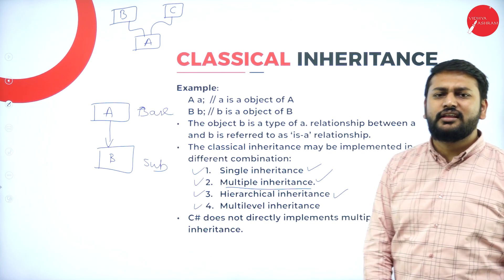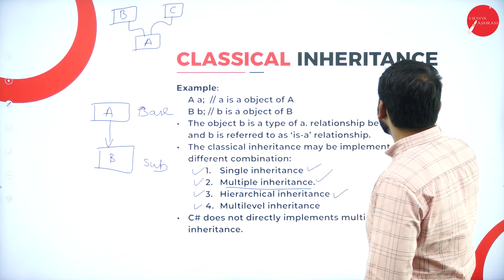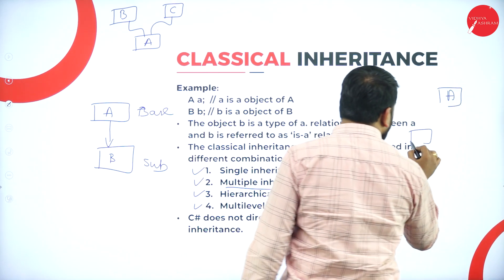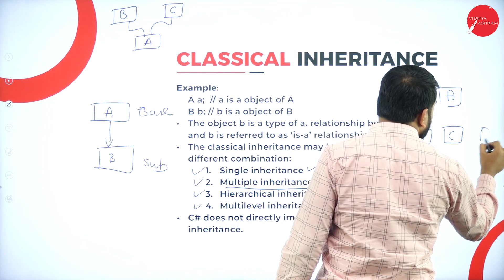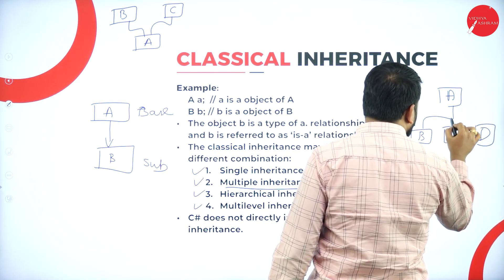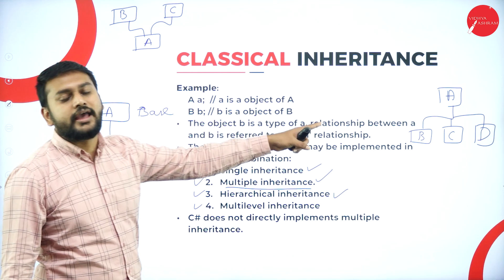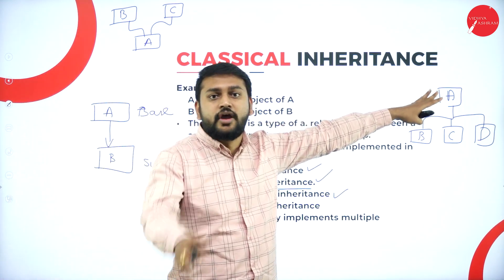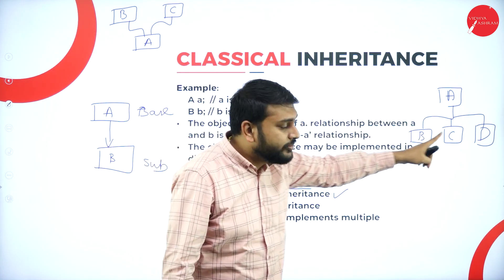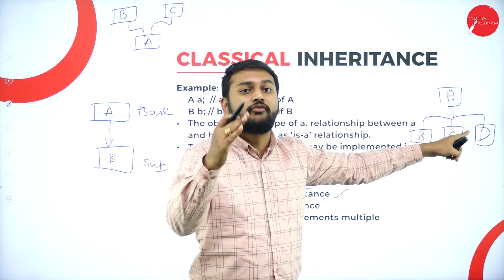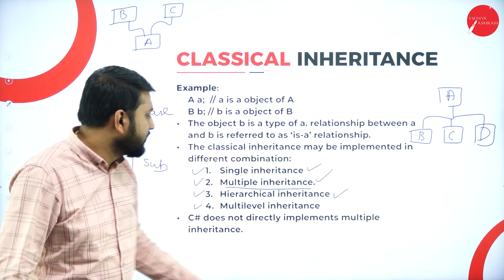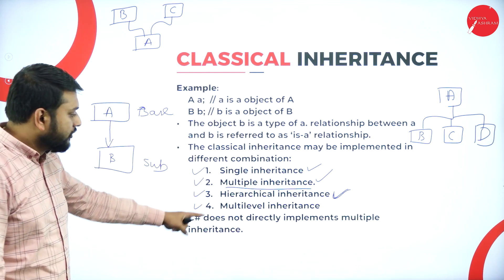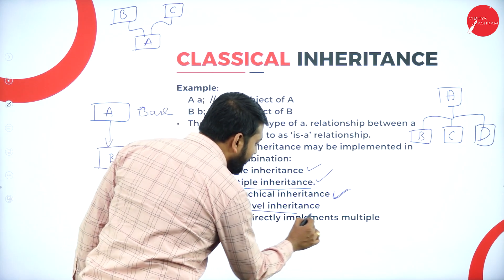Hierarchical inheritance is the third type. Think of one principal with multiple heads of department under them. Here I have only one base class but more than one subclass inheriting from it. That is what we call hierarchical inheritance.